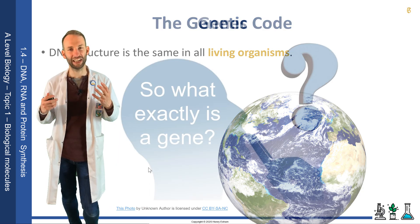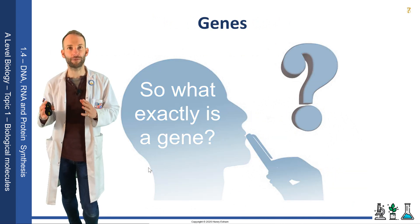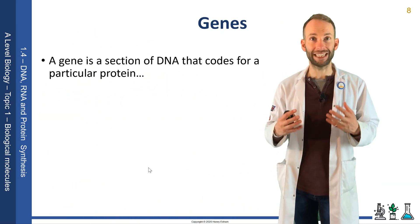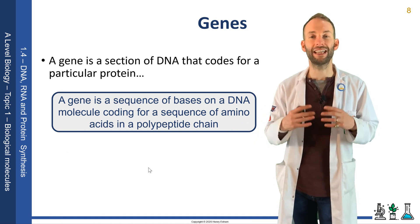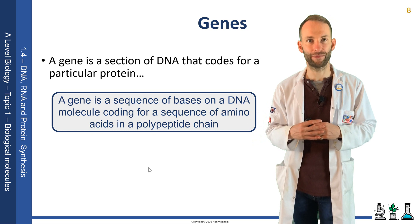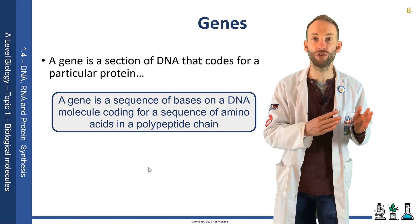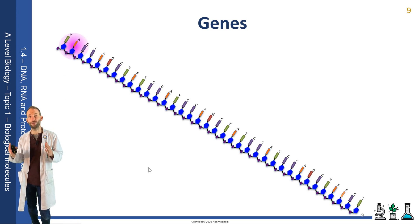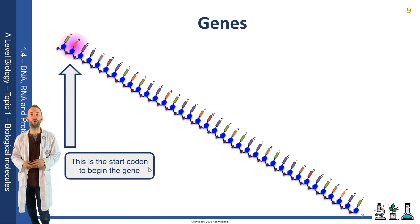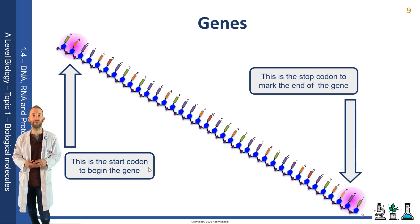So what exactly is a gene? A gene is a section of DNA that codes for a specific protein. Or, if we're going to be more detailed about it, a gene is a sequence of bases on a DNA molecule coding for a sequence of amino acids in a polypeptide chain. The cell knows when to start reading the gene at a particular triplet code — this is called the start codon. And once it reaches a triplet that means stop, the stop codon, then it will finish reading that gene, and that will have manufactured one protein. So here is a gene: there's the start codon, and there's the stop codon, and that whole sequence of bases will code for the protein.